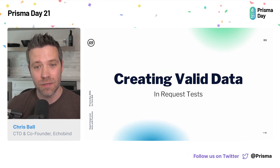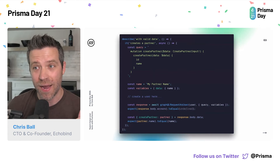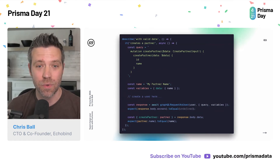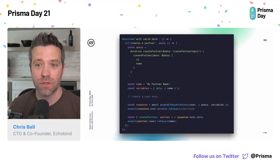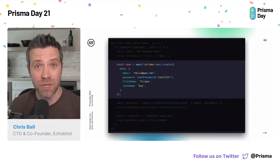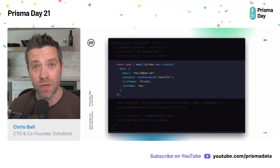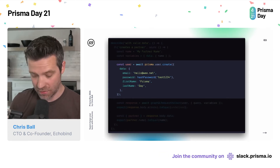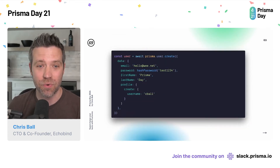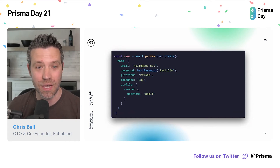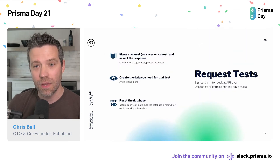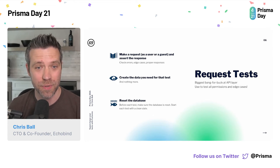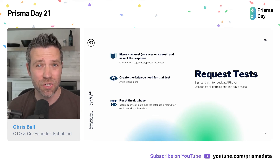Next, we need to make sure we create valid data in our tests. We're going to look at one where a user actually has to be logged in. You can see that we're going to make a GraphQL request as a user — we need to create valid user data. To do that, we can reach for Prisma and use Prisma's user.create and create the data we want, including things like hashing a password. We can also create related data — so if I have a profile for this user that I need to create, that's easily done with all the nice functions Prisma gives us.